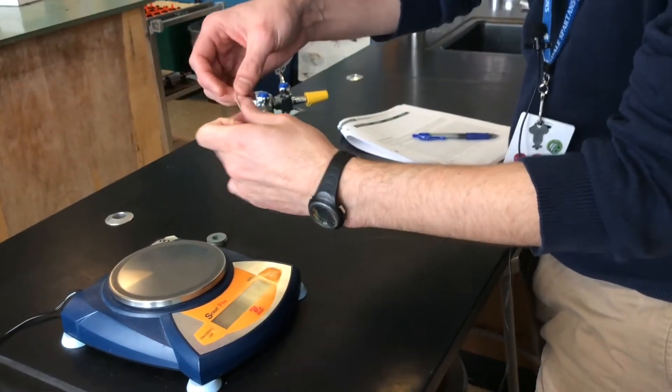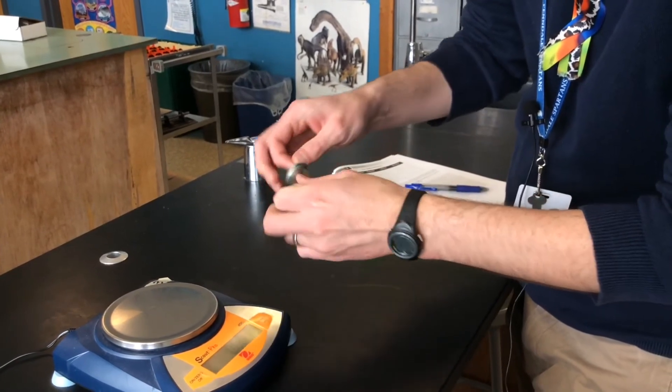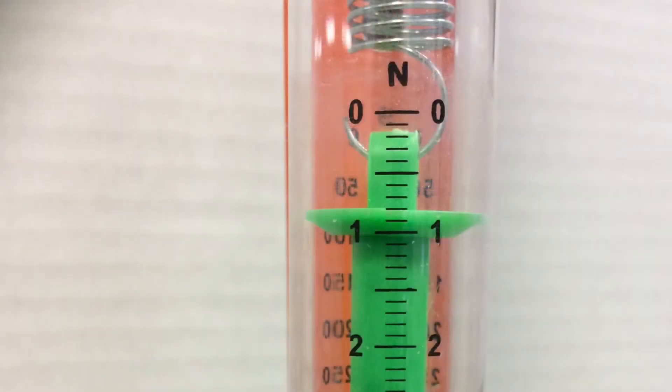And the final data point will be 15 washers. Record the weight of 15 washers in newtons on your data table. That's the last data point.